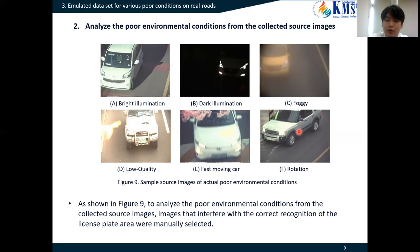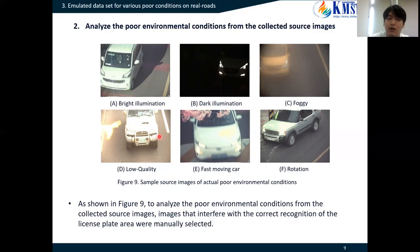The second step is analyzing the poor environmental conditions from the collected source images. As shown in Figure 9, to analyze poor environmental conditions, we manually selected images that interfere with the correct recognition of the license plate area. Image A was affected by strong sunlight, making the license plate area hard to recognize. Contrary to Image A, Image B is a case where recognition is difficult because it was taken at night. Image C was turned hazy due to fog, and Image D was taken in a low-resolution condition and had an after-image along the direction of vehicle movement. Finally, Image E was a case of having a license plate of an arbitrary rectangular shape according to the camera's viewpoint.